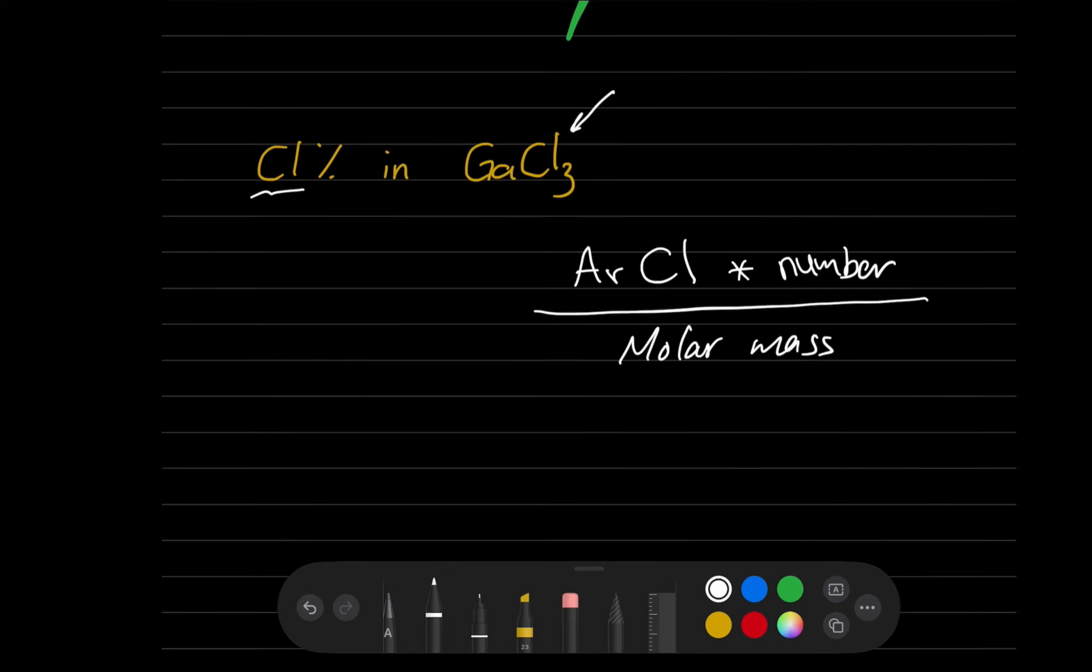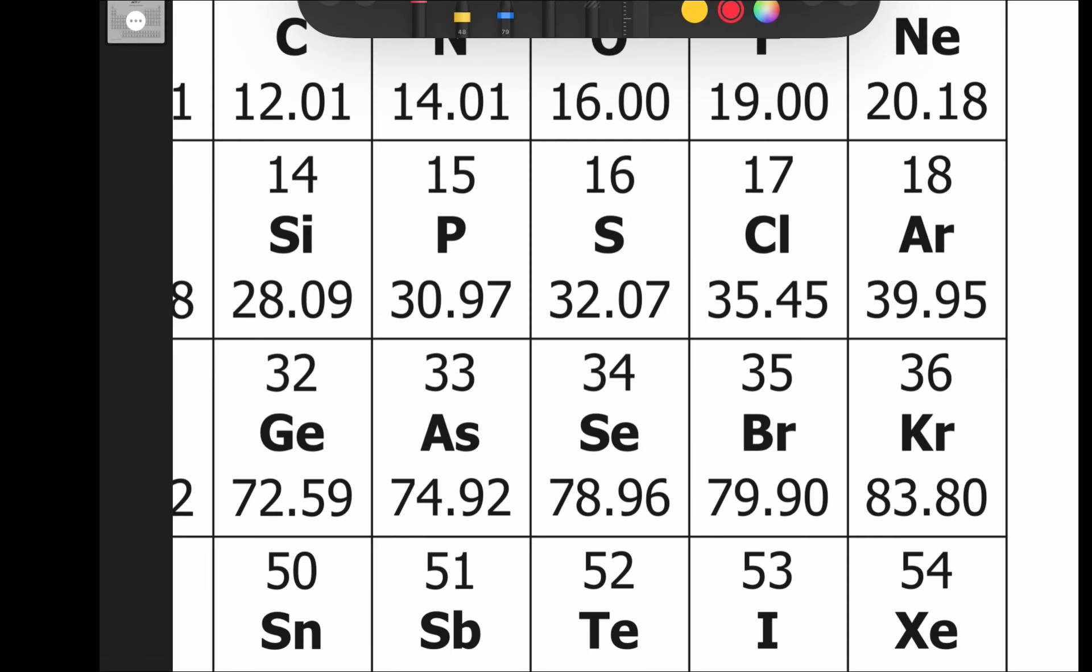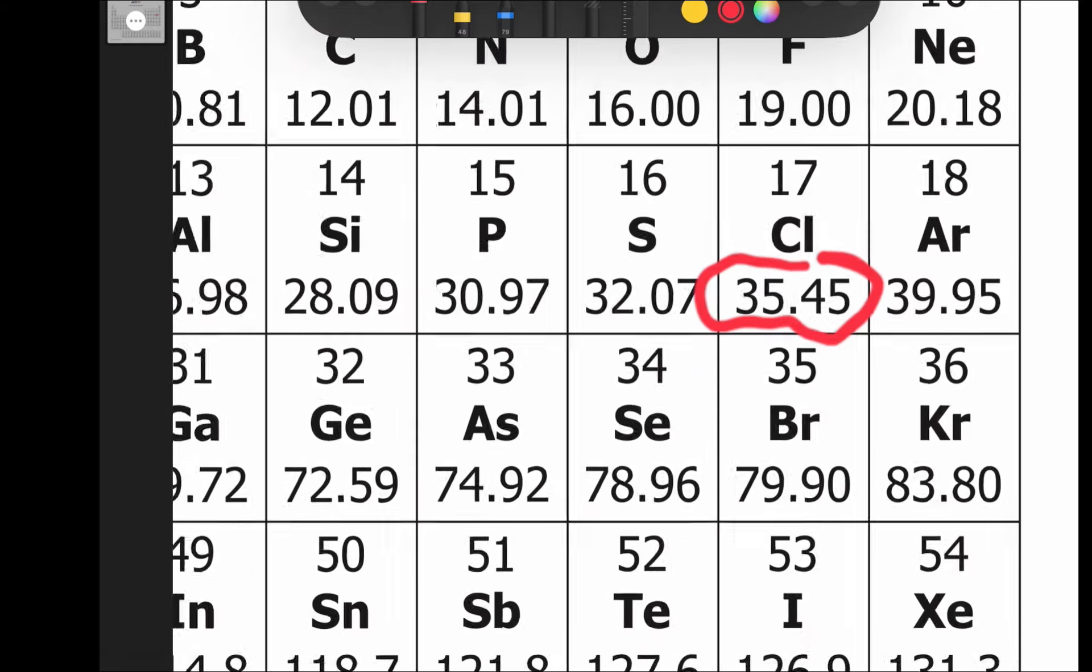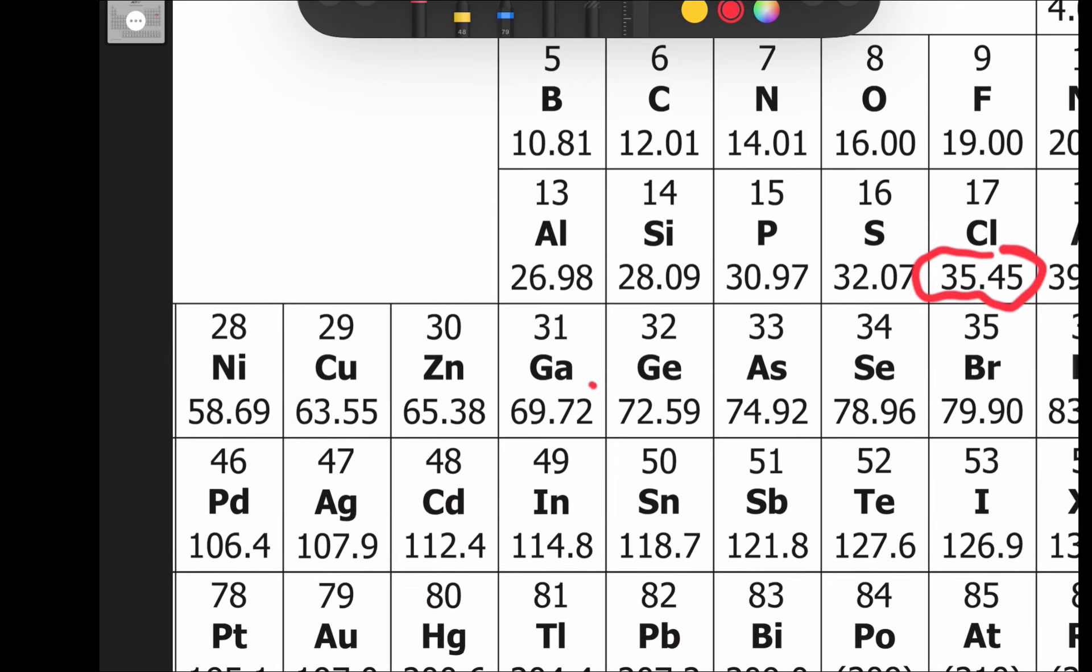At this point we need the periodic table. Let's go there. We need to calculate the percentage mass of a chlorine atom and we notice that it has an atomic mass of 35.45, in addition to gallium which contains 69.72.